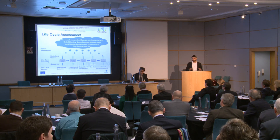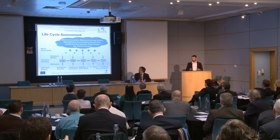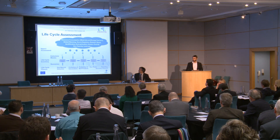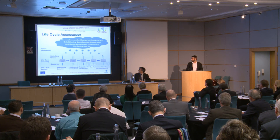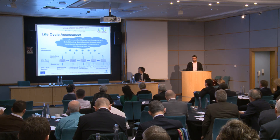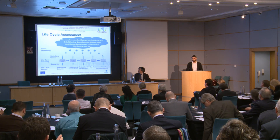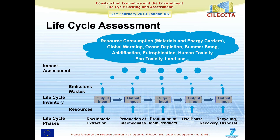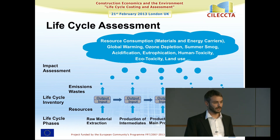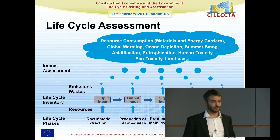We group all emissions that contribute to global warming into the global warming potential, expressed in a reference unit: CO2. But not only CO2 contributes to global warming, so we have characterization factors that express the other emissions in CO2 equivalents. For example, methane has a CO2 equivalent of 25, which means the emission of one kilogram of methane has the same impact on global warming as 25 kilograms of CO2. By going through this step, we compile the huge list of outputs and emissions to a small number of indicators.